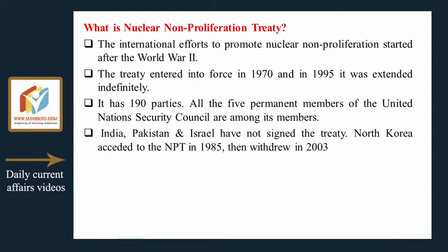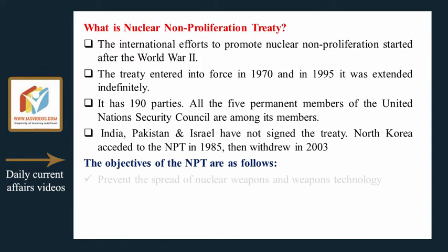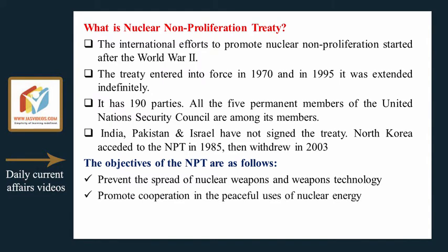India, Pakistan, and Israel have not signed the treaty. North Korea acceded to the NPT in 1985, then withdrew in 2003. The objectives of the NPT are: to prevent the spread of nuclear weapons and weapons technology, to promote cooperation in the peaceful uses of nuclear energy, and nuclear disarmament.